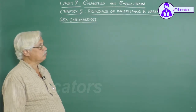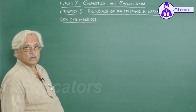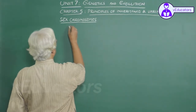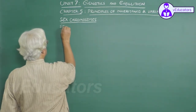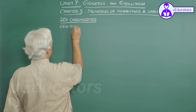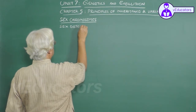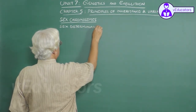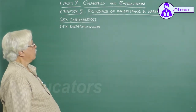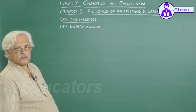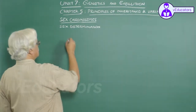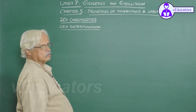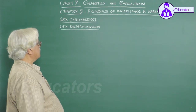Let us now see what is the role of sex chromosomes in sex determination. Four types of sex determination are known to occur in different animal examples.